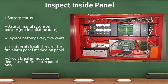Inspect the inside of the fire alarm panel. The date of manufacture shall be written on the batteries. Batteries shall be replaced every five years. The location of the dedicated circuit breaker should be labeled on the inside of the fire alarm panel. Note that the dedicated circuit breaker is for the fire alarm panel only — nothing else should be wired to that breaker.